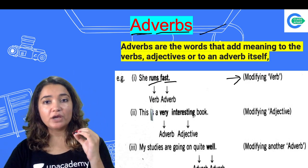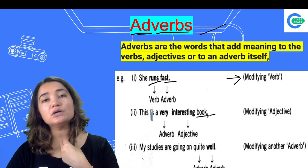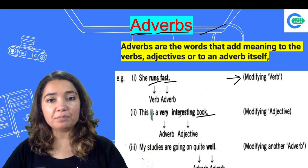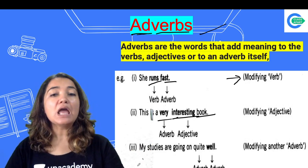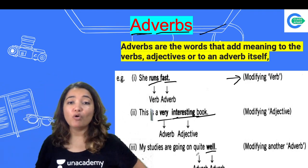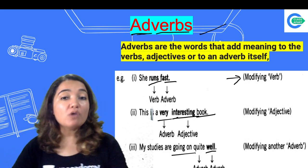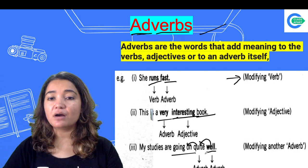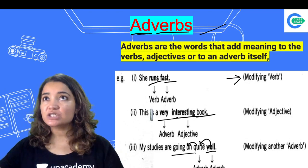So 'fast' here is modifying your verb — this is your adverb. Another example: 'This is a very interesting book.' Here 'interesting' is your adjective, because 'book' is your noun. And 'very' is acting as your adverb, because it modifies the adjective. Similarly, 'My studies are going on quite well.' Here 'going on' is your verb, 'well' is your adverb, and 'quite' is also your adverb — so adverbs can modify verbs, adjectives, and other adverbs.